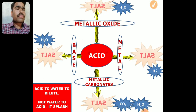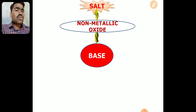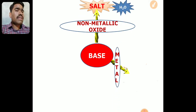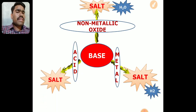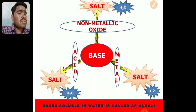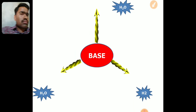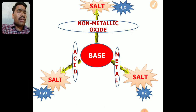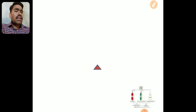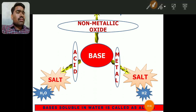Next: reaction of base with non-metallic oxide → salt and water. When a base reacts with a metal → salt + hydrogen gas. When acid reacts with base → salt + water. Bases that are completely soluble in water are called alkalis — this is an important definition to remember. Salt is the common product in all these reactions. We will stop here and continue next period.